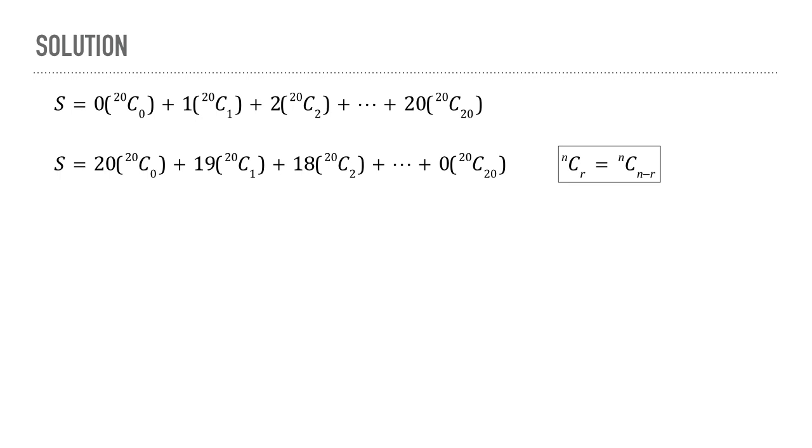Now adding these two expressions, we find that we have 2S equal to 20 times the given expression. Now the sum of the expression inside the brackets is equal to 2 to the power 20.